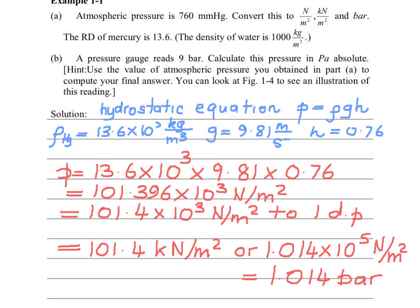We are told that atmospheric pressure is 760 mmHg. We need to convert this to newton per meter squared, kilonewton per meter squared, or bar - the different variations of expressing pressure. We are told that the relative density of mercury is 13.6, and the density of water is 1,000 kg per cubic meter.